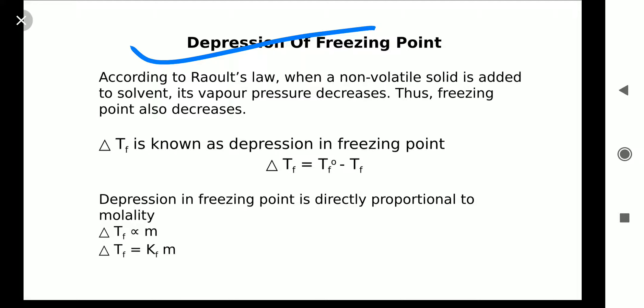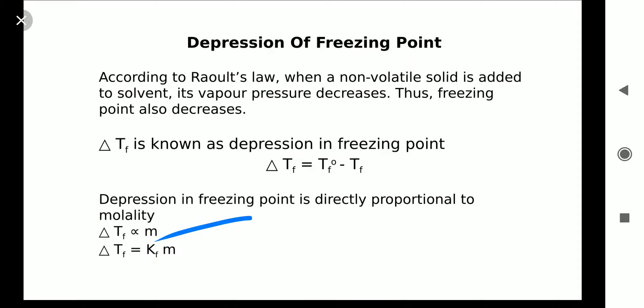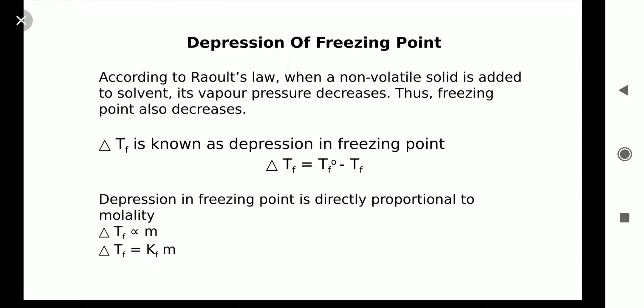Depression in freezing point, delta Tf, is directly proportional to molality M. So delta Tf equals Kf into M, where Kf is the freezing point depression constant, also called the molar depression constant or cryoscopic constant.